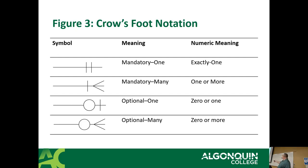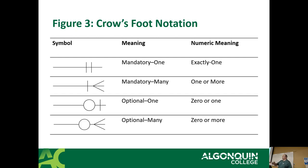In Crow's foot notation: two lines means mandatory one — for example, an employee has a badge, they must have one and only one. Every student has a student ID card — you have one card, and each card belongs to one person. You can only ever have one student ID card.